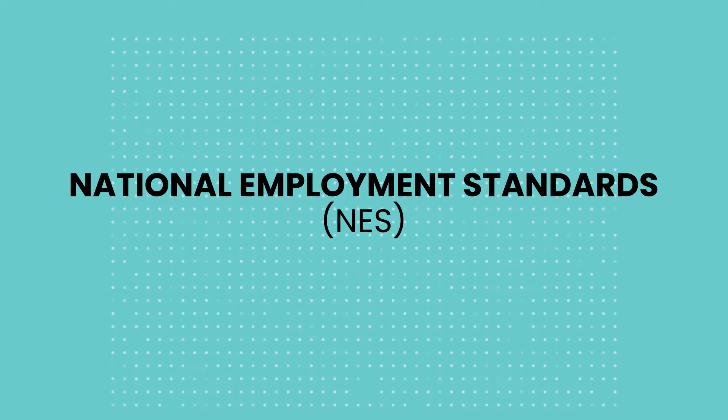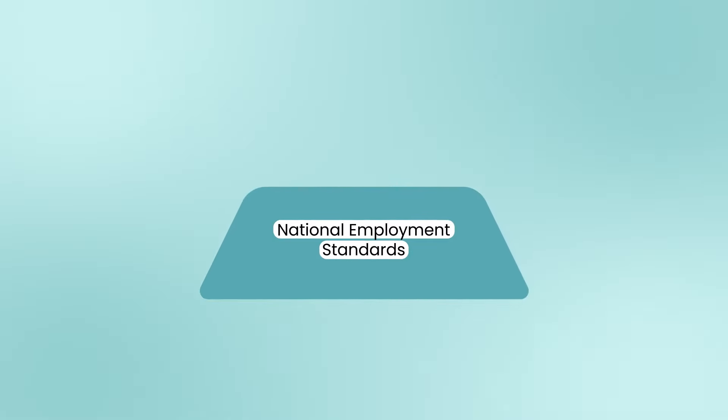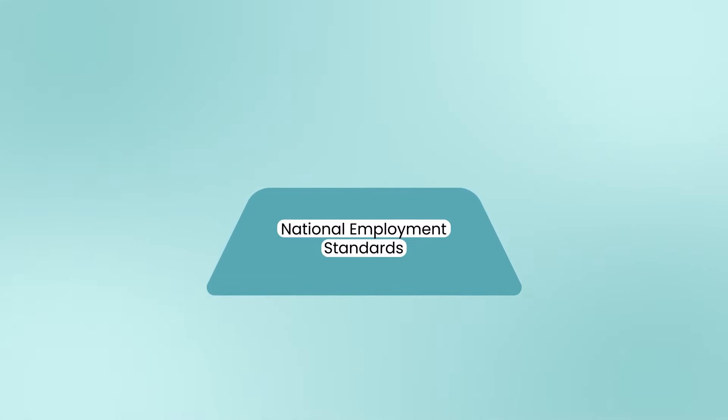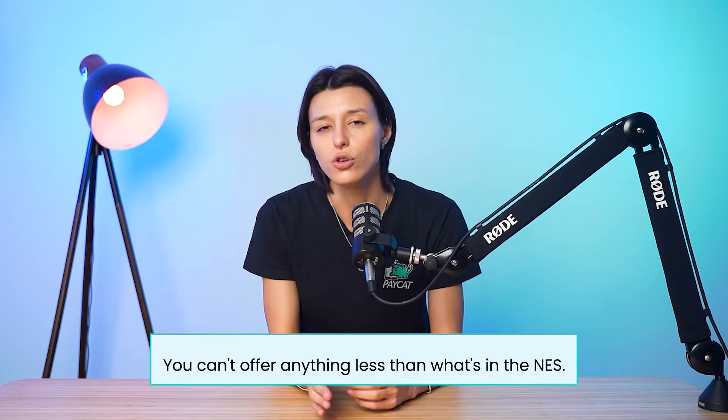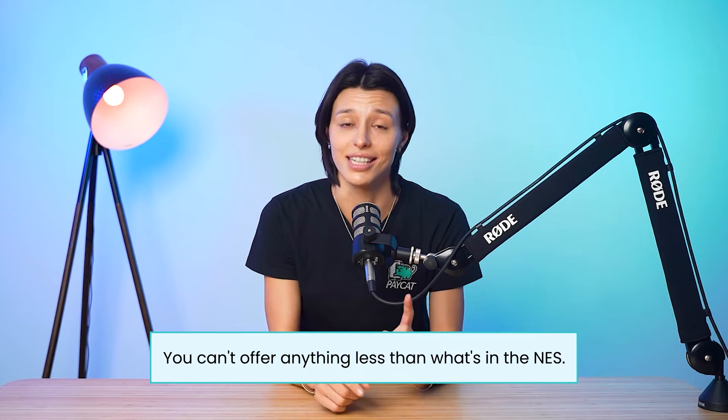Let's start with the National Employment Standards, or NES for short. Think of the NES as the foundation that sets the absolute minimum for employee entitlements in Australia. It's made up of 11 minimum standards that cover everything from hours of work to leave and even termination requirements. These minimum standards apply to all employees covered by the national workplace system, regardless of any award, agreement, or contract. In other words, you can't offer anything less than what's in the NES.